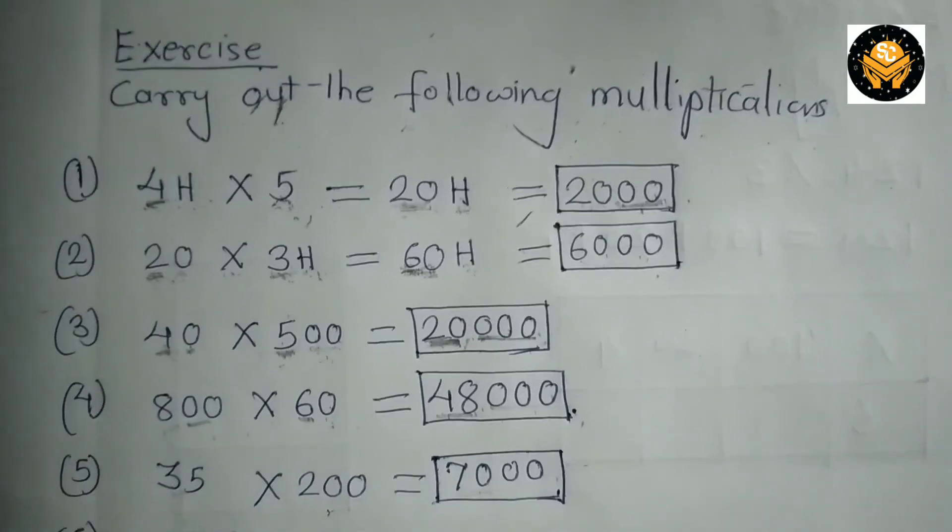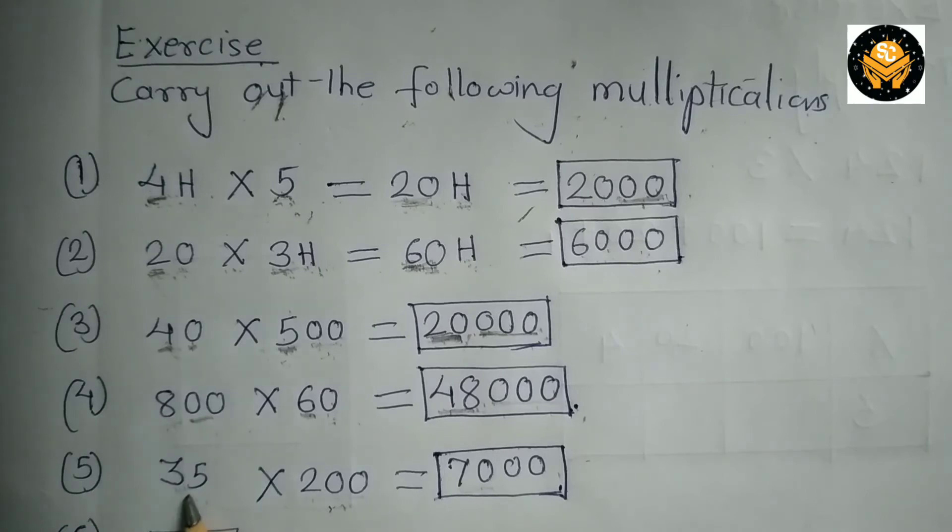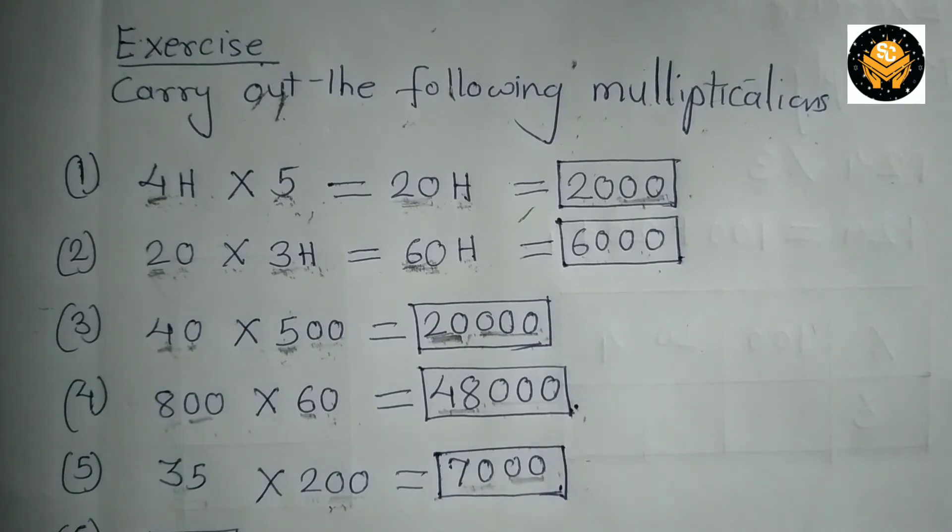Now let's take one more example. 35 multiplied by 200. Here first you are going to multiply 35 by 2. Here you can make use of the lattice method which we have learnt last year. So 35 times 2 is 70. So write 70 here and then add these 2 0s in front of 70. So the product is 7,000.